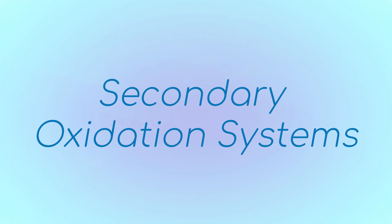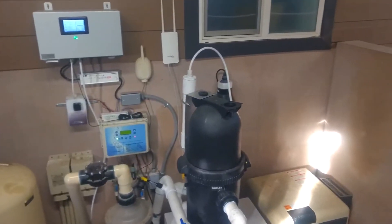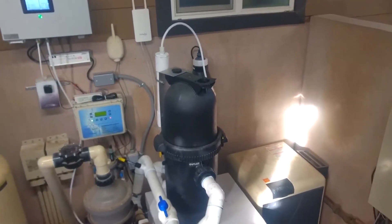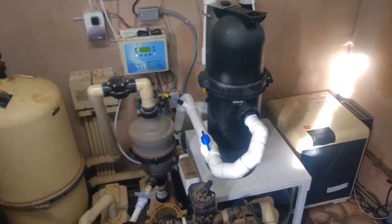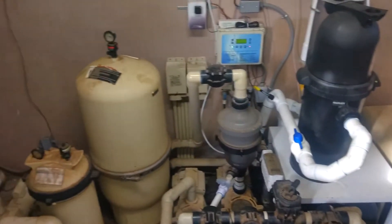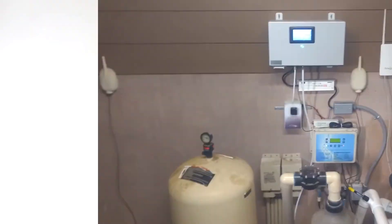Secondary oxidation systems provide oxidation at a much higher level than chlorine can. These systems have been proven to be very beneficial and can increase chlorine's efficiency. We'll go more in depth on the strengths and weaknesses of these systems later on in this course.